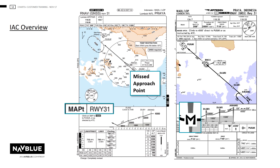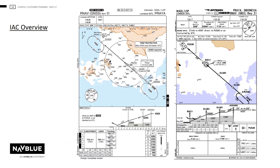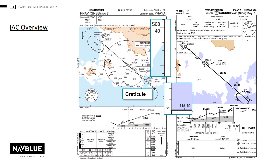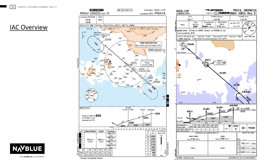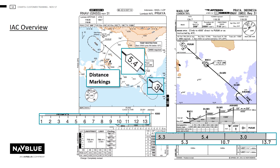The missed approach point will be written above the missed approach text in the profile. NAVBLUE charts are drawn to scale. Latitude and longitude markings along the right and top chart border with a resolution of 1 minute, with longer markings for 5 and 10 minutes and figures shown for every 10 minutes. For the left and bottom chart border, mark every 10 minutes. The magnetic variation is shown at the top left-hand corner of the chart on all IACs. The distance markings in the profile are nautical miles from the threshold or displaced threshold.